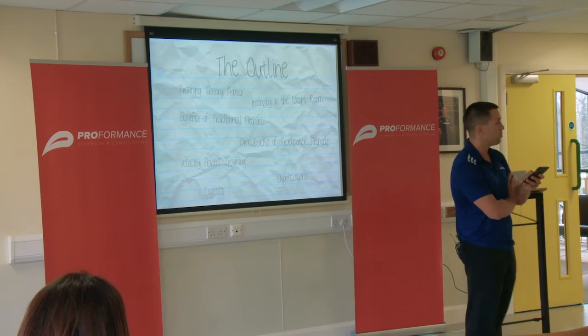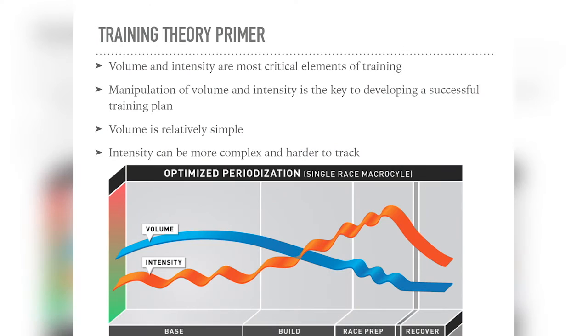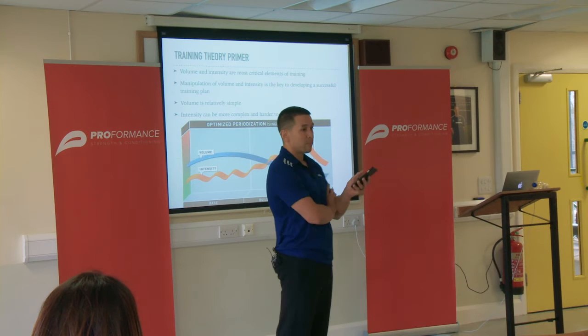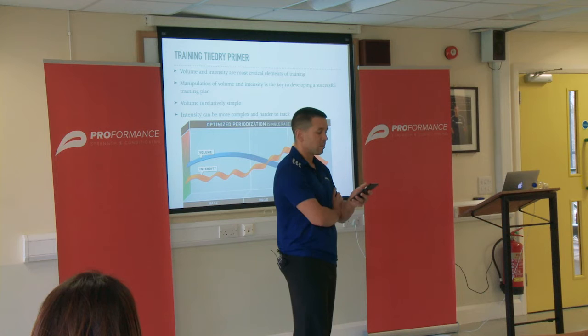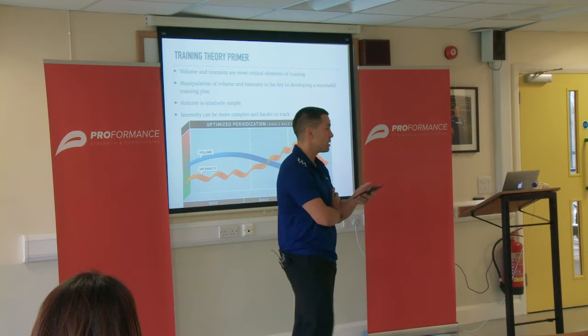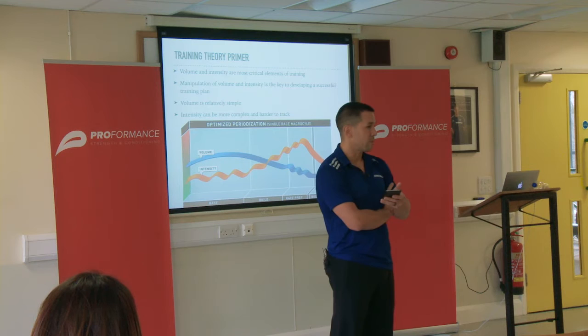Very briefly, I wanted to discuss training theory. I think this is something that everyone in this room is probably very comfortable with — especially this idea of the importance of volume and intensity. These two metrics, volume and intensity, are the two most important variables when it comes to the success or failure of a training plan. Over the course of a year, a month, or whatever the length of your training cycle is, the manipulation of these two variables — more so than perhaps any other variables — will have the biggest impact on the success or failure of that training plan.